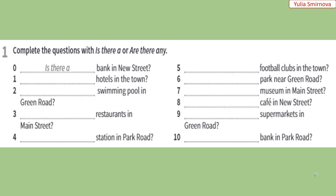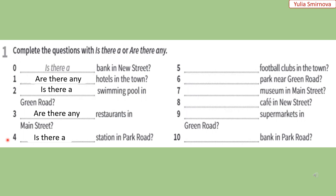Let's do exercise 1 in your workbooks. Complete the questions with 'is there a' or 'are there any'. Вправа 1 у ваших друкованих зошитах. Завершімо питальні речення фразами 'is there a' або 'are there any' для однини та для множини. 1. Are there any hotels in the town? — Чи є готелі у місті? 2. Is there a swimming pool in Green Road? — Чи є на Green Road басейн? 3. Are there any restaurants in Main Street? — Чи є на Main Street ресторани? 4. Is there a station in Park Road? — Чи є на Park Road станція? 5. Are there any football clubs in the town? — Чи є у місті футбольні клуби? 6. Is there a park near Green Road? — Чи є біля Green Road парк?